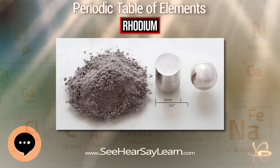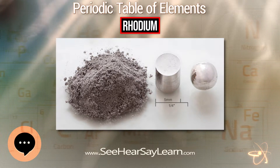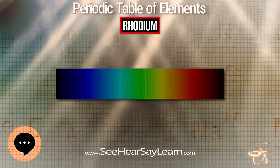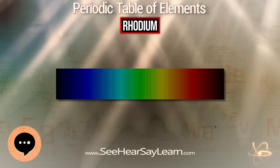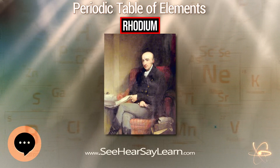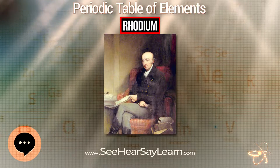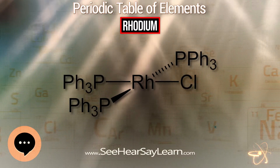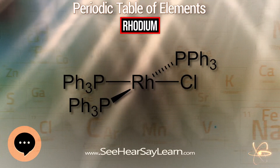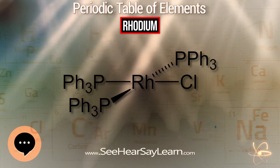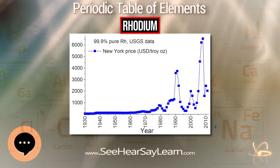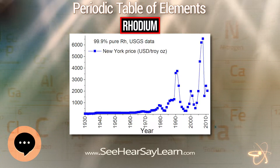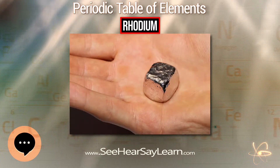Rhodium belongs to group 9 of the periodic table, but the configuration of electrons in the outermost shells is atypical for the group. This anomaly is also observed in the neighboring elements niobium, ruthenium, and palladium. The common oxidation state of rhodium is +3, but oxidation states from 0 to +6 are also observed. Unlike ruthenium and osmium, rhodium forms no volatile oxygen compounds.